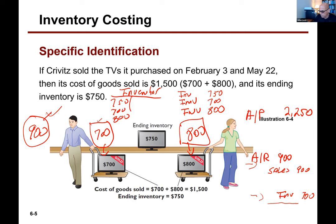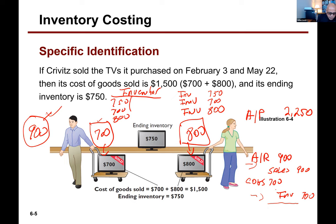Debit cost of goods sold $700. So the journal entry is: we send the customer a bill for $900, credit sales for $900, and debit cost of goods sold $700 with a corresponding credit to inventory for $700. What would be my gross profit when I prepare my income statement? Sales are $900.